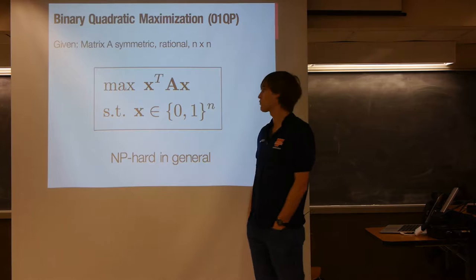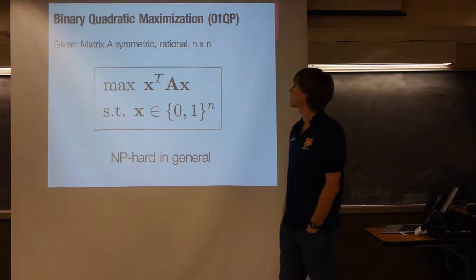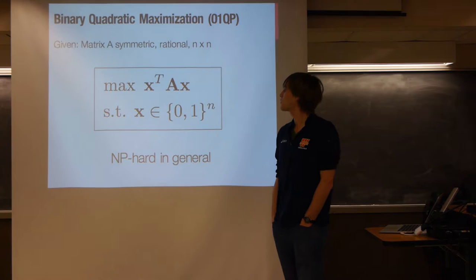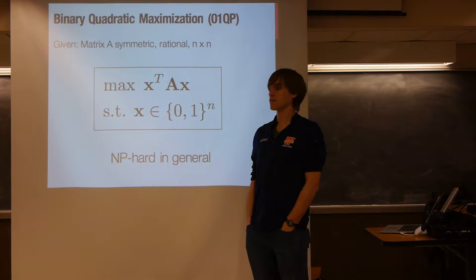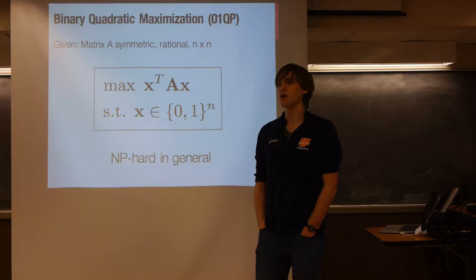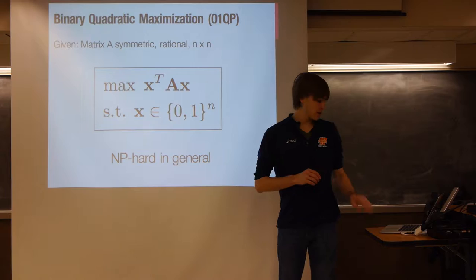Before introducing what a zonotope is, I want to use this problem as a motivating example. This is the binary quadratic maximization problem, or 0-1 QP. We're given some symmetric n-by-n matrix A, and we want to maximize x-transpose times A times x, where x has to be a binary vector. This is an NP-hard problem in general, and it's closely related to a lot of NP-hard graph algorithms — for example, the maximum cut problem in graphs.